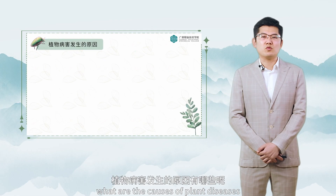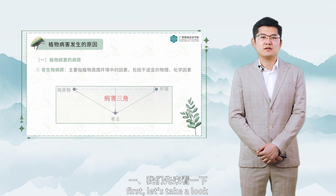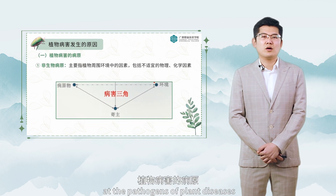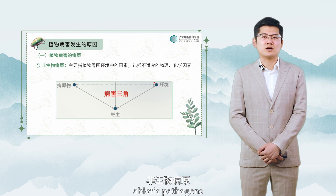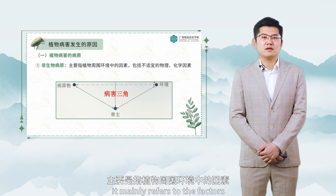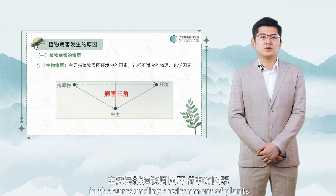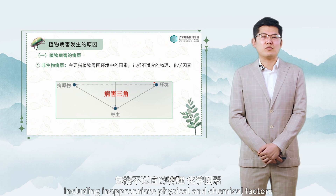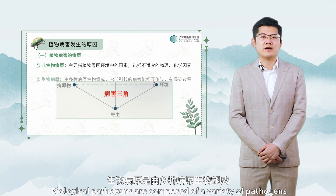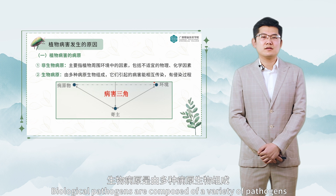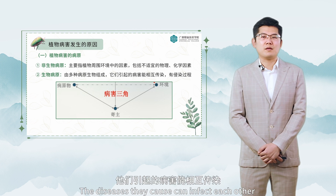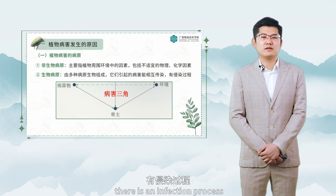What are the causes of plant diseases? Let's take a look at the pathogens of plant diseases. Abiotic pathogens mainly refer to factors in the surrounding environment of plants, including inappropriate physical and chemical factors. Biological pathogens are composed of a variety of pathogens, and the diseases they cause can infect each other — there is an infection process.